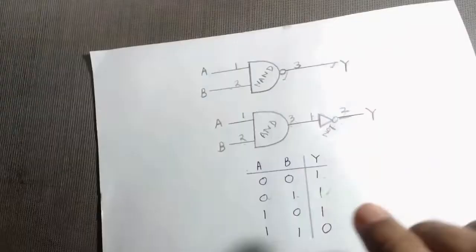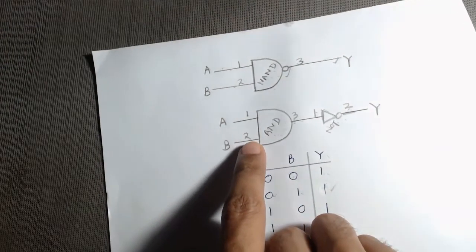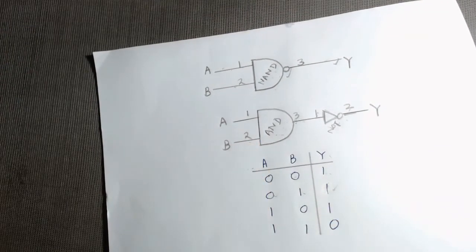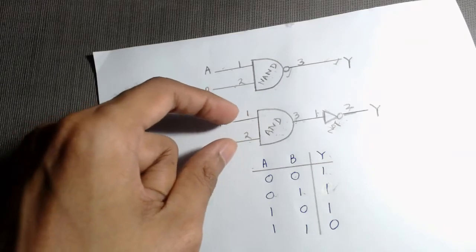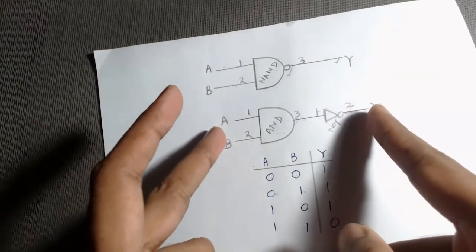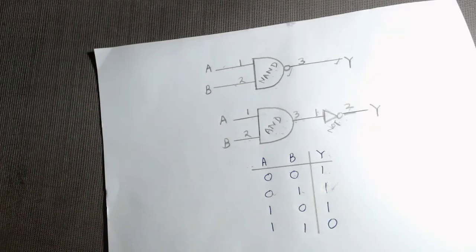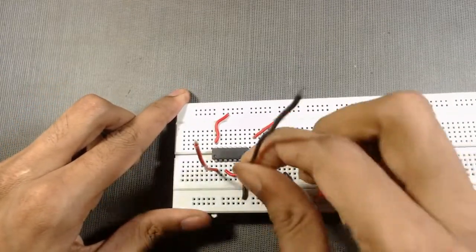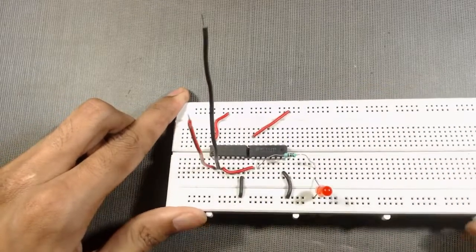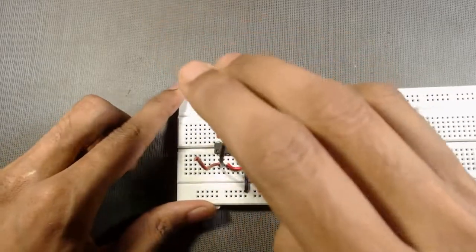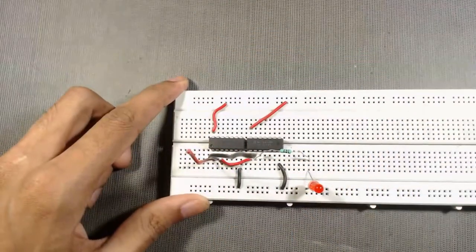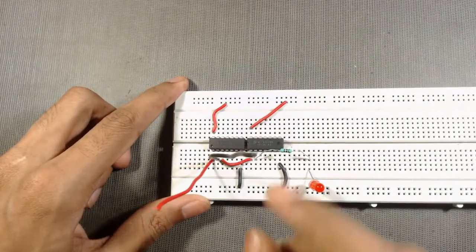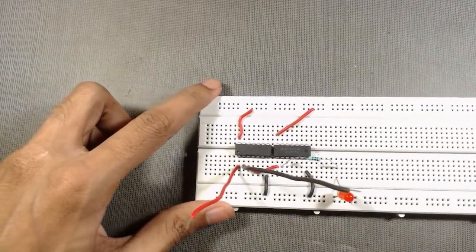Now we have to connect the input terminals. From the diagram, pin number 1 and 2 are the inputs of the AND gate. We will connect two wires at the input — we have connected the red wire at pin 1 and the black wire at pin 2. This red wire will be our terminal A and the black wire will be our terminal B.